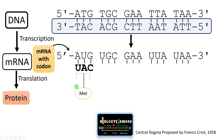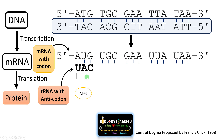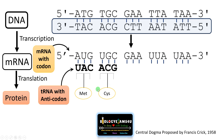tRNA has an anticodon. You can see this is the anticodon UAC. The anticodon is complementary to the codon of mRNA. So a tRNA with UAC anticodon can bind to the AUG codon of mRNA. On the other side of the tRNA, there is the amino acid methionine. So anticodon-codon binding specifies amino acids in a protein sequence. Similarly, a tRNA with ACG anticodon, which is complementary to UGC, binds and adds the amino acid cysteine.